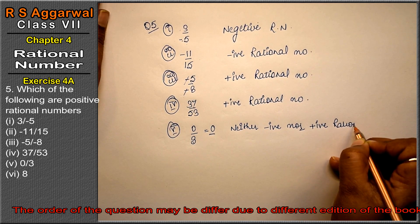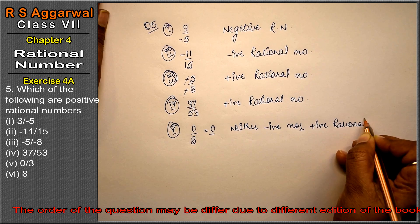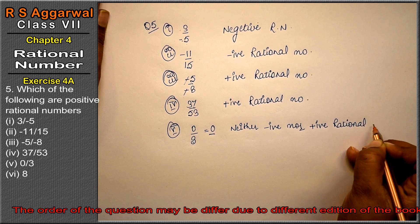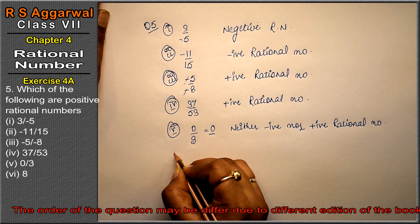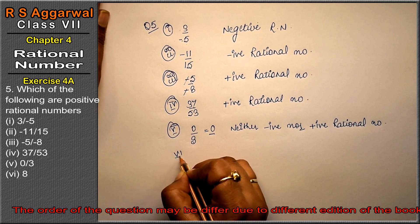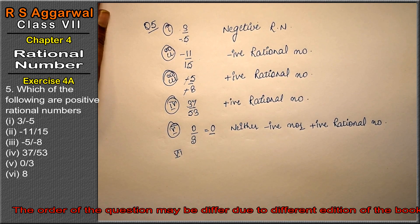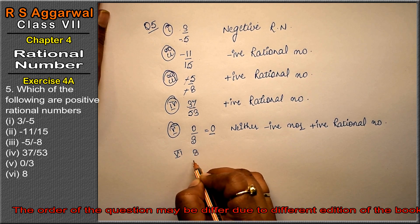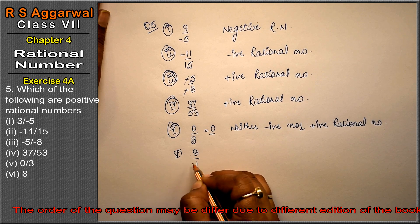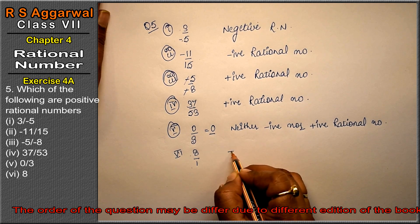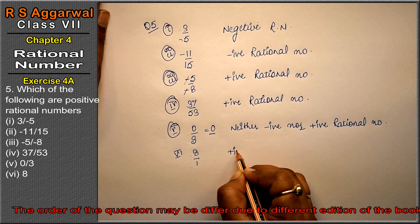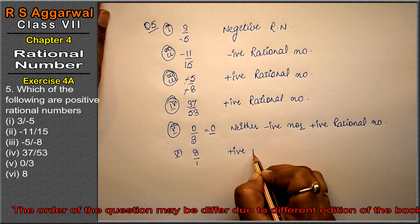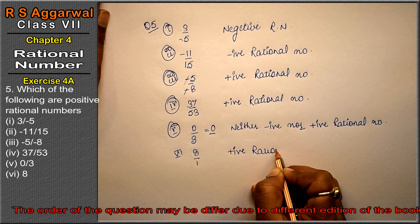Sixth part is 8. We can write 8 as 8 upon 1. Both are positive, so it is a positive rational number.